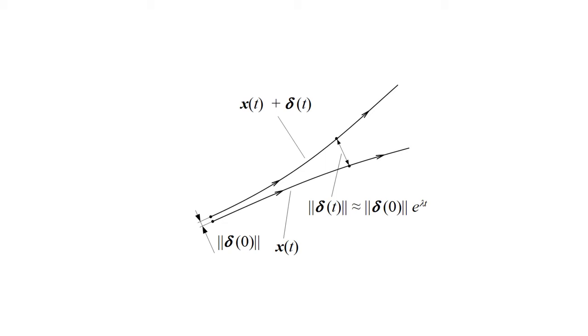It is defined by δ(t) = δ(0) * e^(λt), where λ is a Lyapunov exponent. This means that the neighboring trajectories separate exponentially fast in a chaotic region.